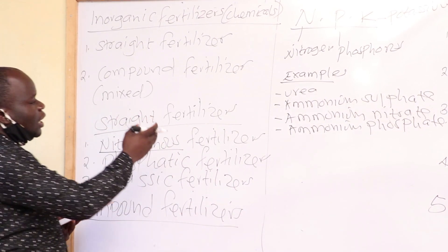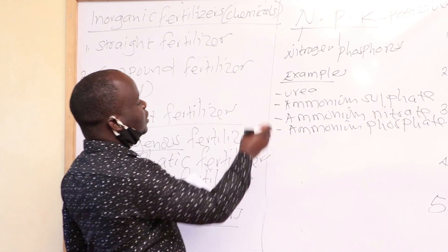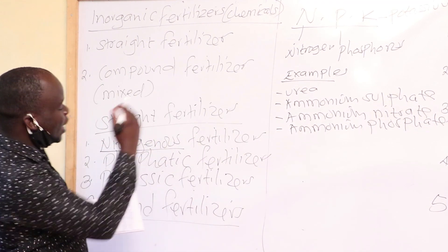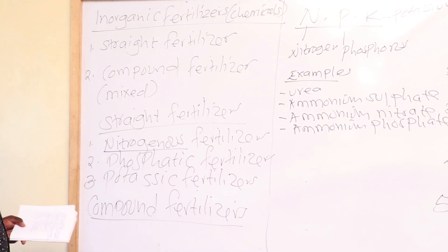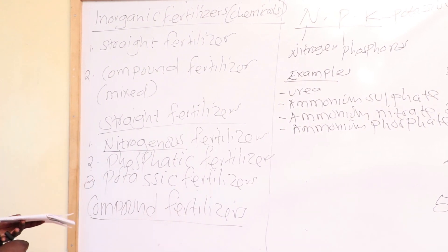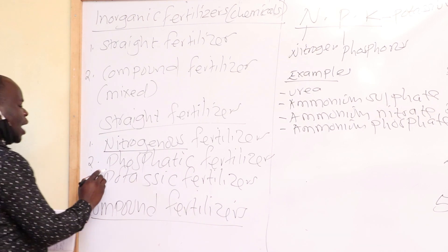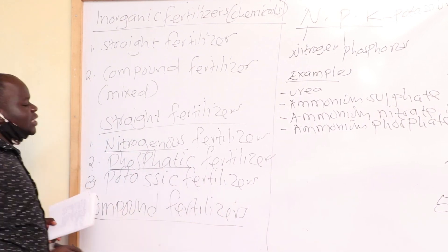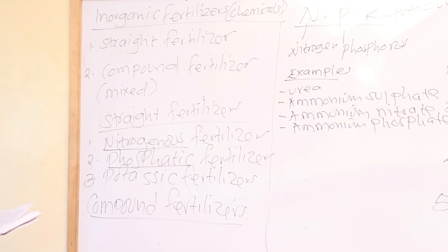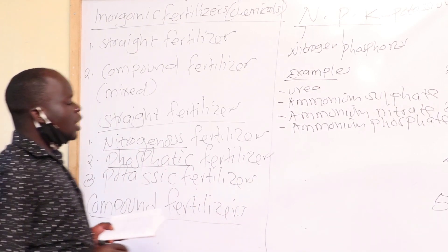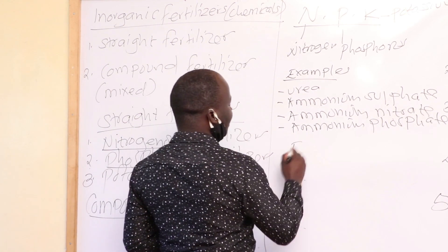You can go to a nearby agro-vet and inquire whether they have one in that particular shop. We have straight fertilizer number two, known as phosphatic fertilizers. From the word phosphatic, these are straight fertilizers that have got only phosphorus as one of the major macronutrients.